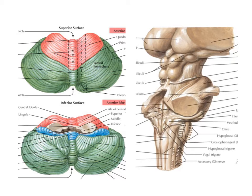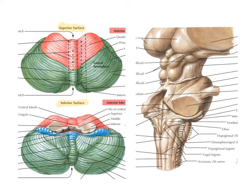Let's look at the images to the left first. What we've got here is a superior view of the cerebellum at the top, and below that we've got an inferior view of the cerebellum. What you'll notice initially is that the top of the cerebellum is relatively flat, because it's squashed underneath the tentorium cerebelli, whereas the inferior surface of the cerebellum is more irregular, following roughly the shape of the posterior cranial fossa with the brainstem in there as well.